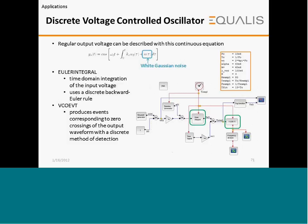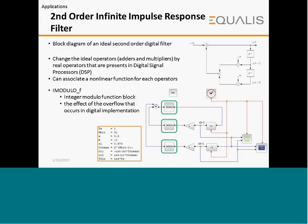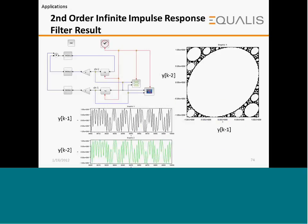A discrete voltage-controlled oscillator example shows the X-COS block diagram and parameters with corresponding results. Another example is a second-order infinite impulse response (IIR) filter, where the block diagram, schematics, and parameters are displayed along with simulation results.